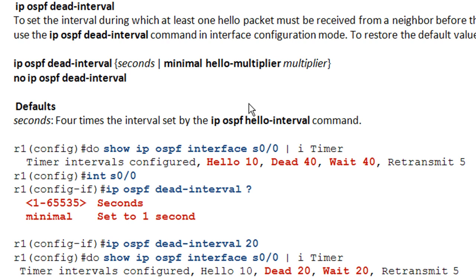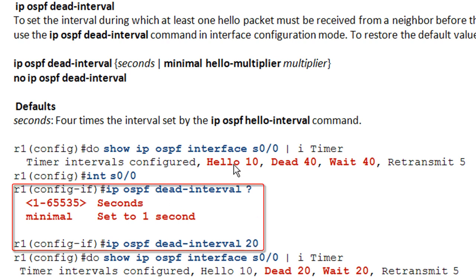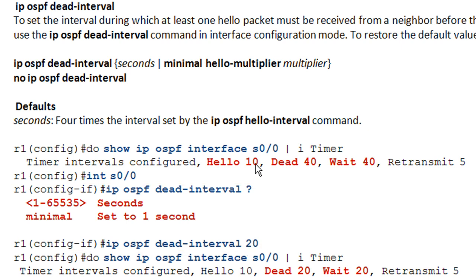Looking at this interface, the hello is set to 10 seconds and the dead timer to 40 seconds, meaning we'll miss up to four OSPF hello messages before declaring the neighbor relationship down. If 40 seconds seems too long, you can set the ip ospf dead-interval to 20 seconds — twice the hello time. Remember, this does not automatically change the hello timer, so the hello remains at 10 seconds and the dead timer changes to 20 seconds, meaning we can miss up to two OSPF hello packets before declaring the neighbor down.